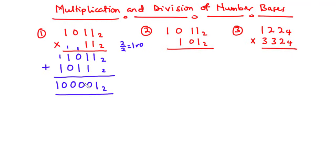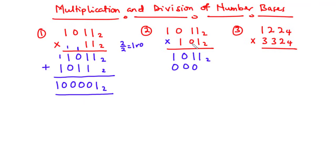Now, let's move on to the second example. 1 times 1 is 1. 1 times 1 is 1. 1 times 0 is 0. 1 times 1 is 1. Now, to the next value: 0 times 1 is 0. 0 times 1 is 0. 0 times 0 is 0. And then 0 times 1 is 0.